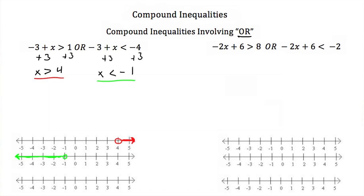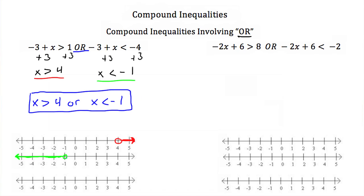Now we need values of x that satisfy one or the other of these expressions. So the combination of these two graphs is our final solution. x has to be greater than 4, or x has to be less than negative 1. We combine these two graphs with key points at negative 1 and at 4 — both open circles — and shade everything to the right of 4 and everything to the left of negative 1. This final number line is the graph of our solution.